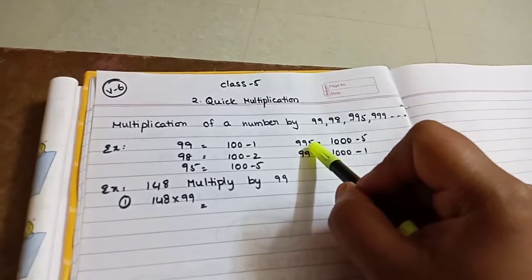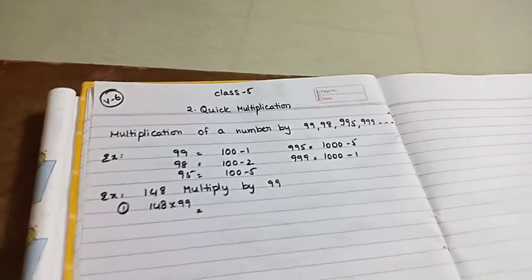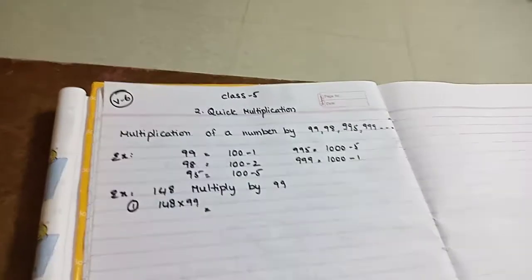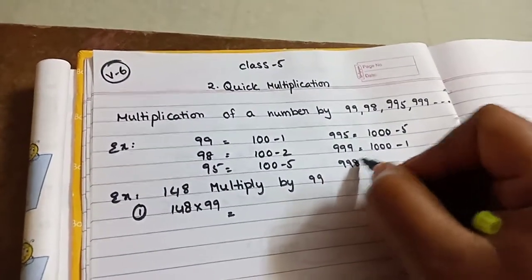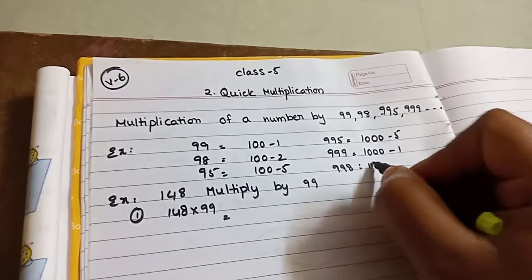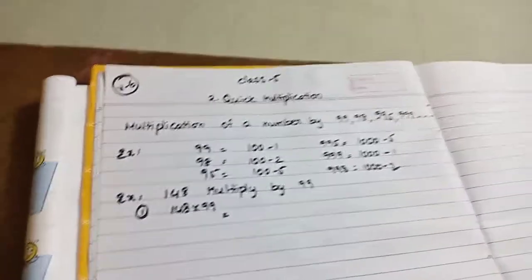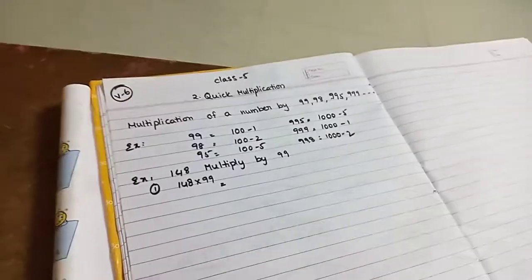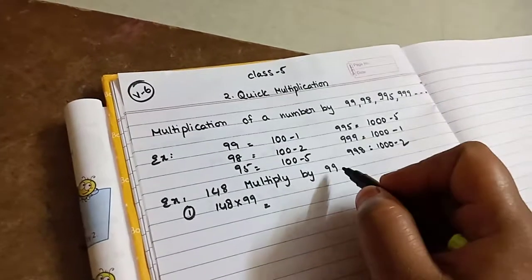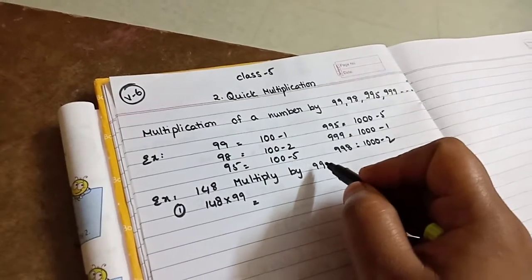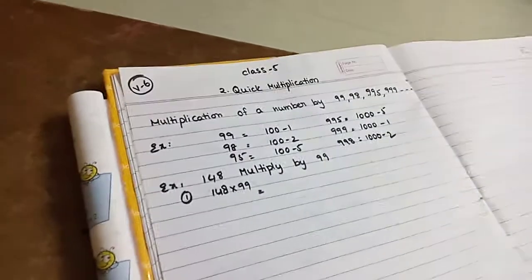How can we write 995? 1000 minus 5. Same like, how can we write 998? 1000 minus 2. So, using this process, how can we do the quick multiplication using 99, 98, 999, and 995?